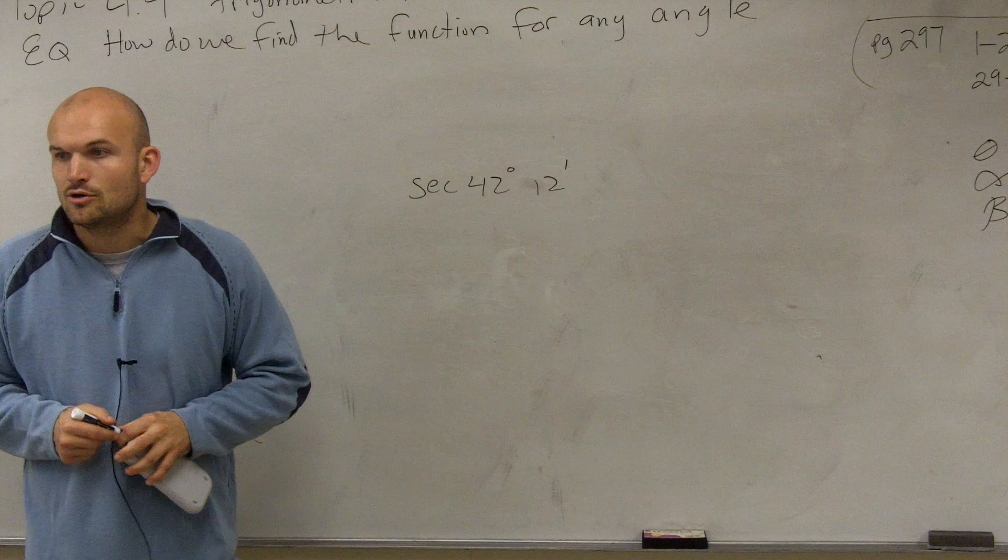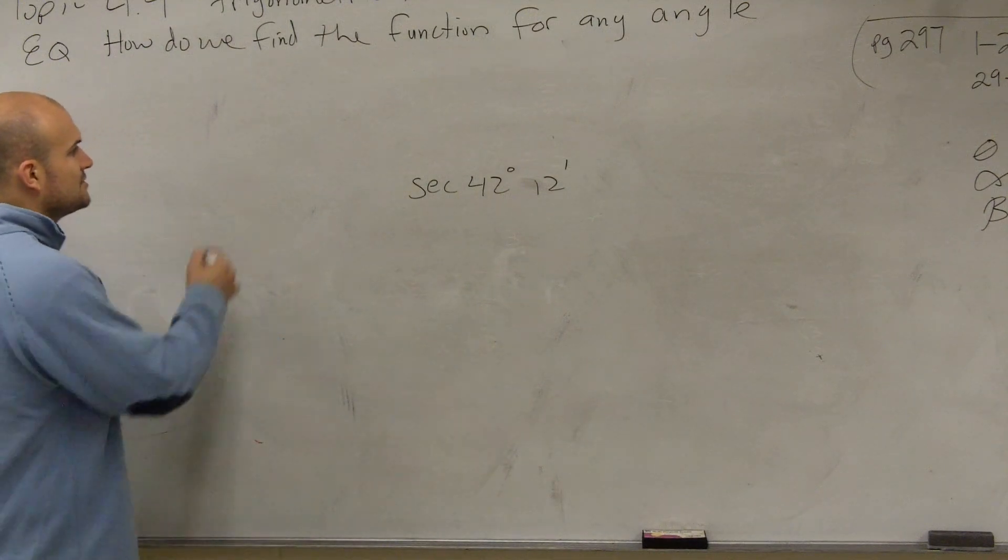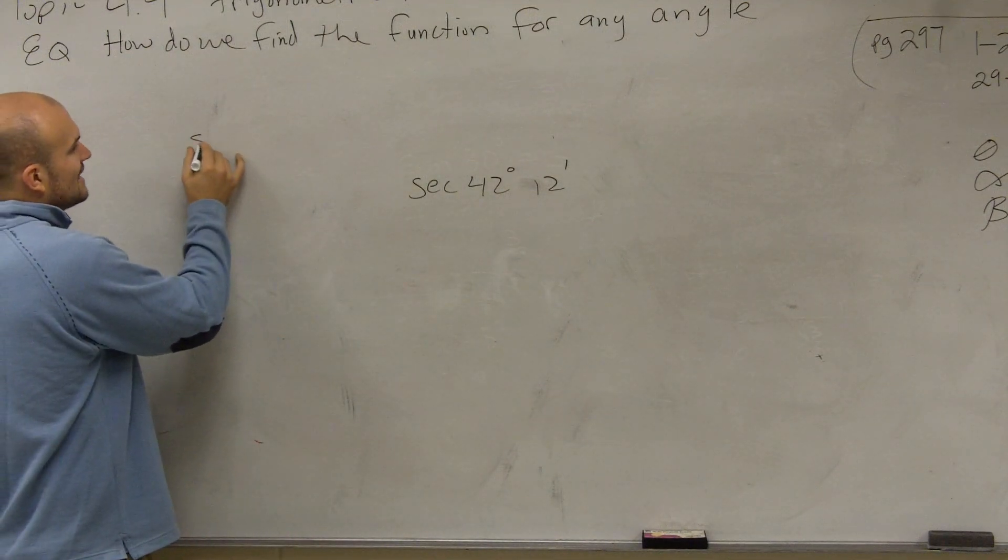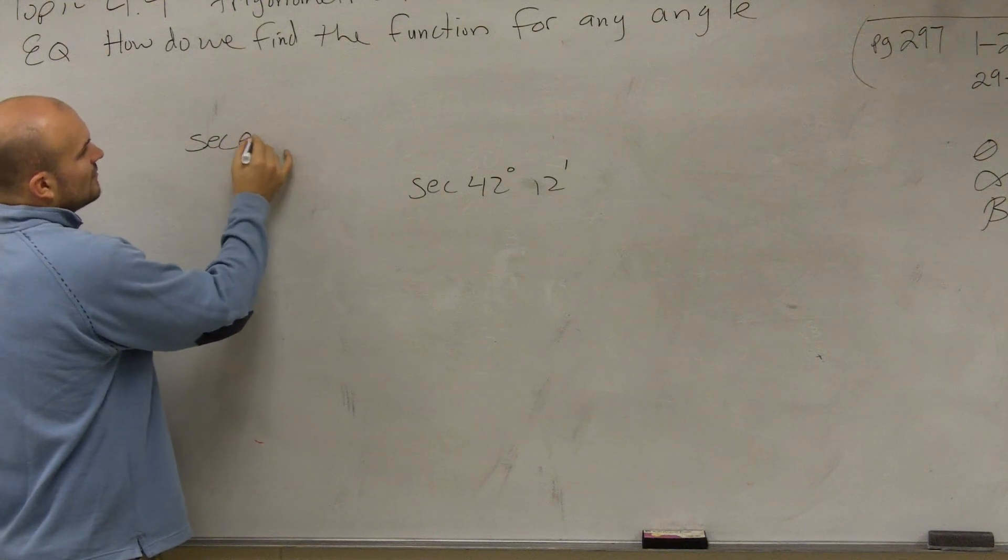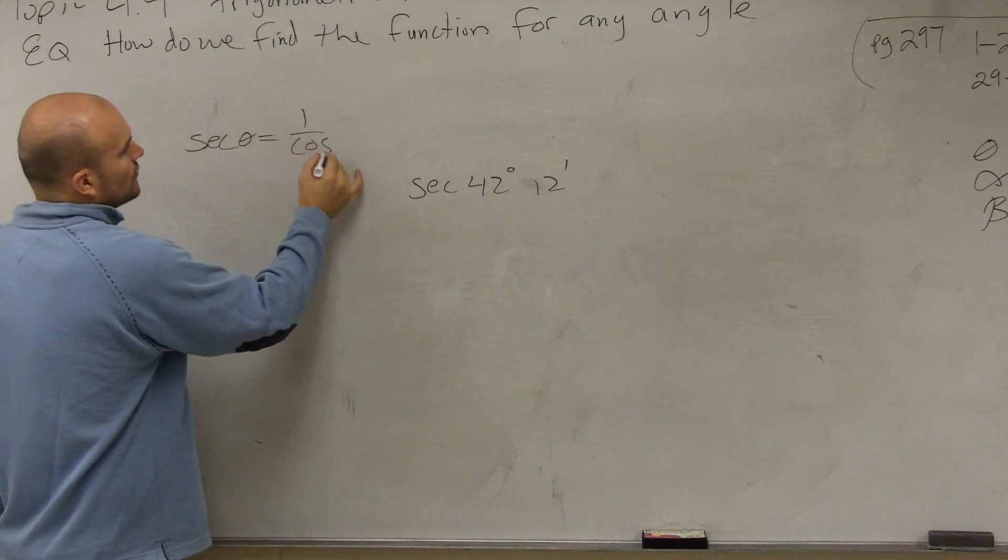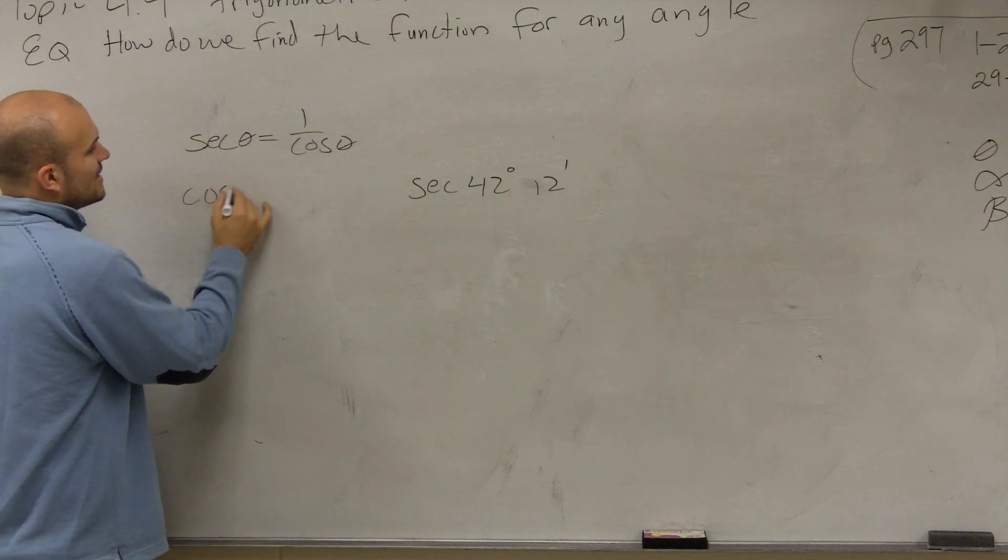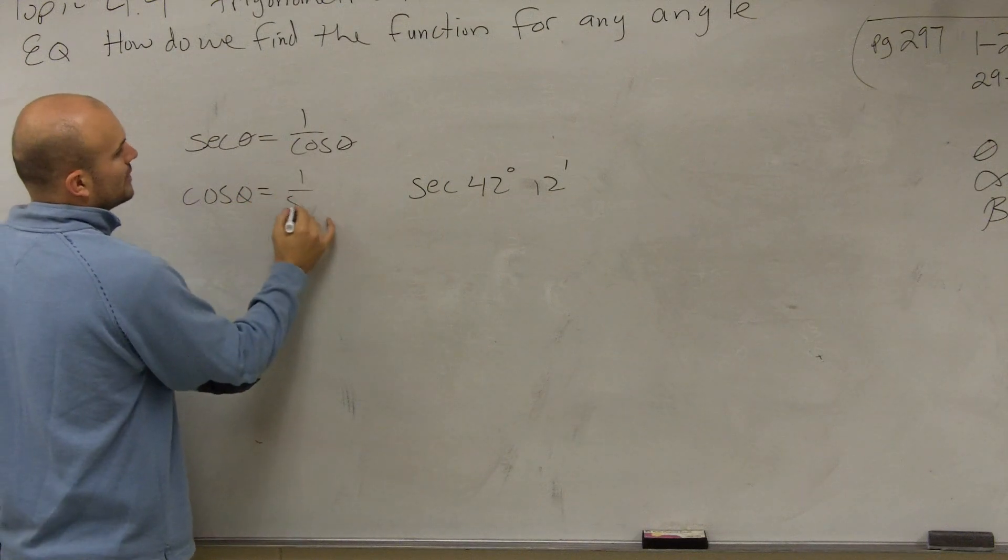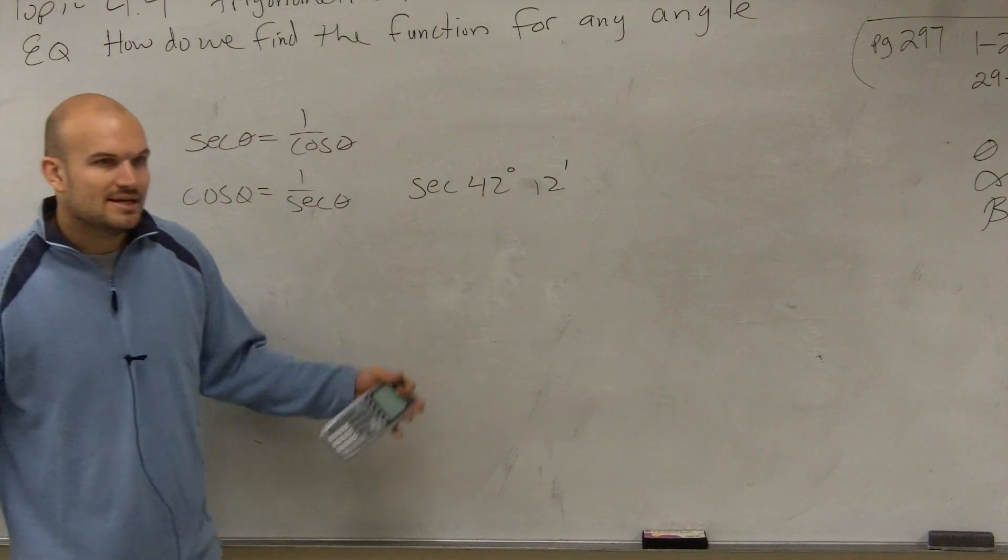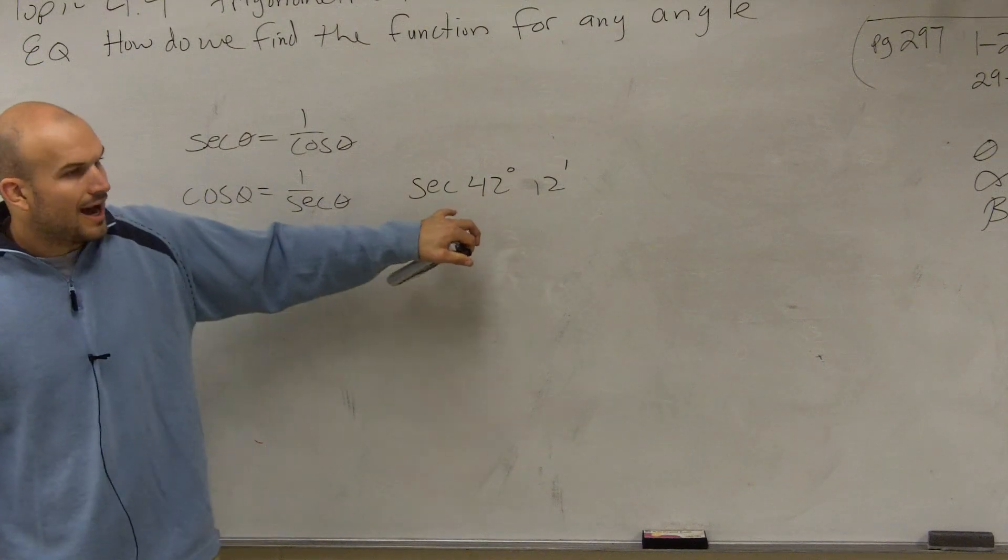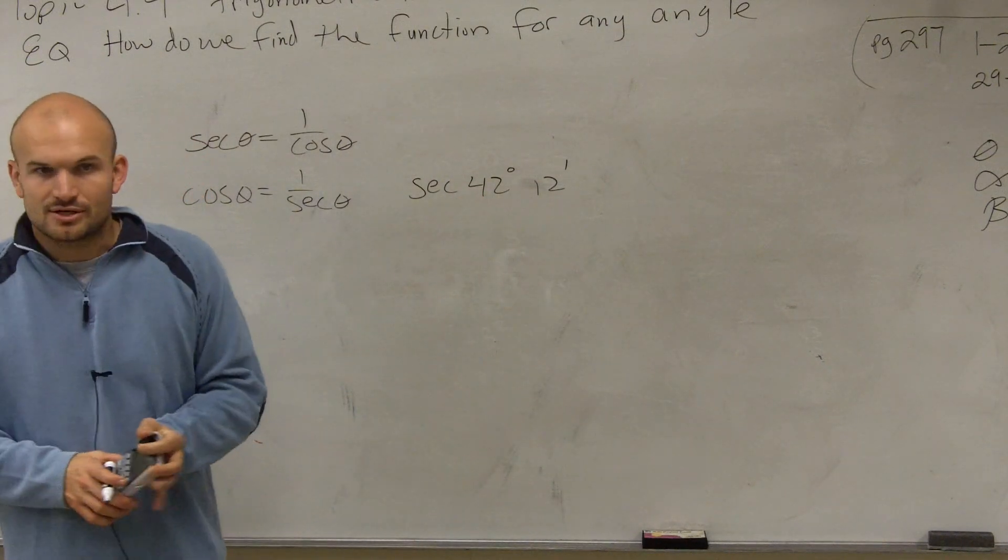How do secant and cosine relate to each other? Remember that the secant of an angle equals 1 over cosine of an angle, and cosine of an angle equals 1 over secant of an angle. So these are reciprocals of each other.